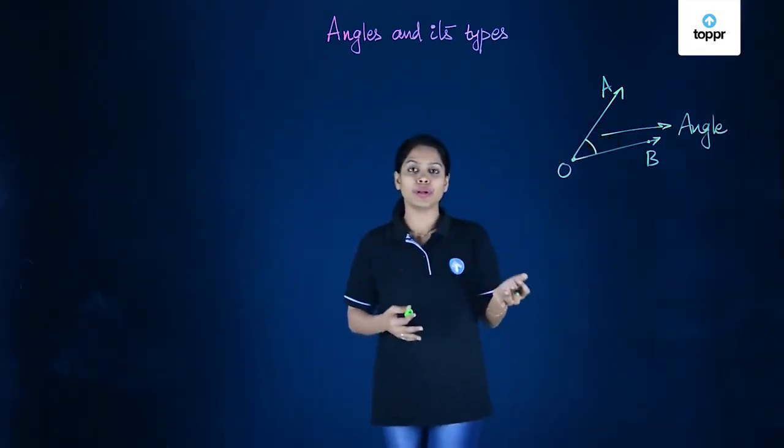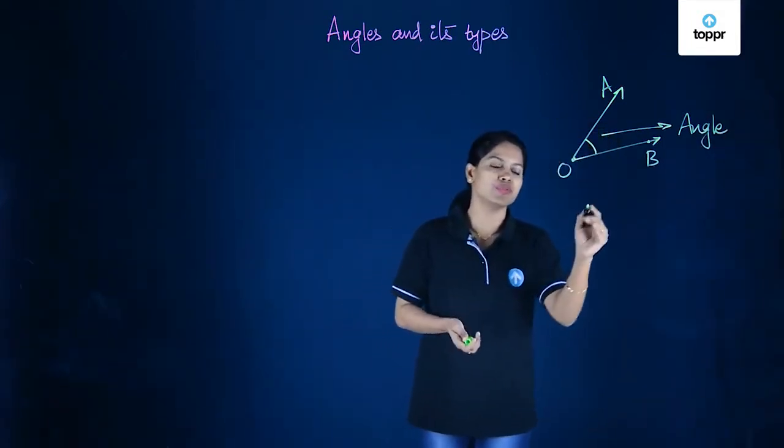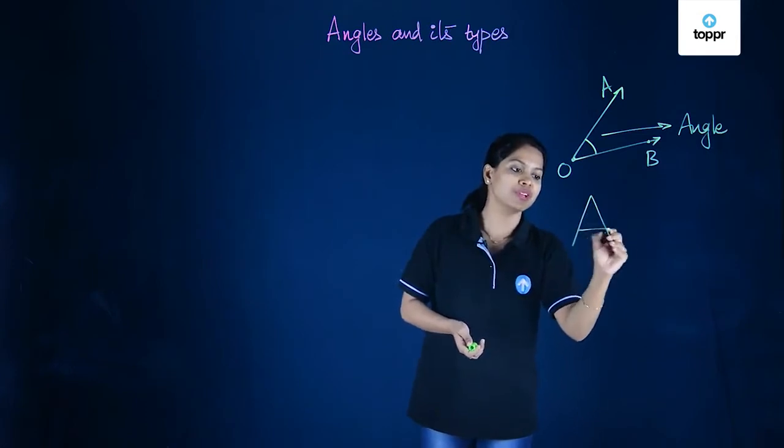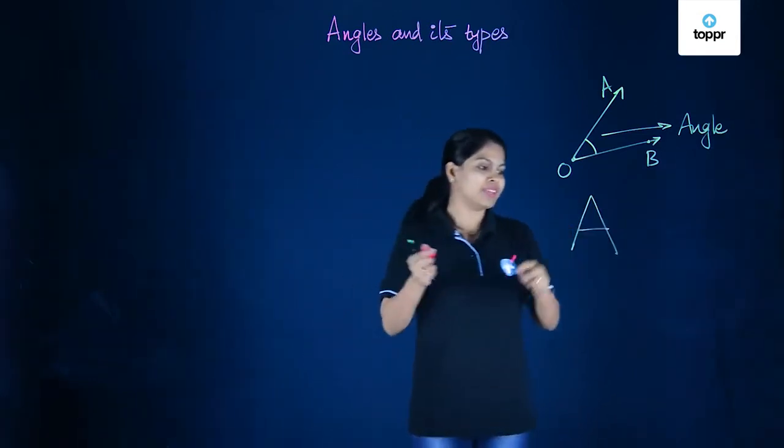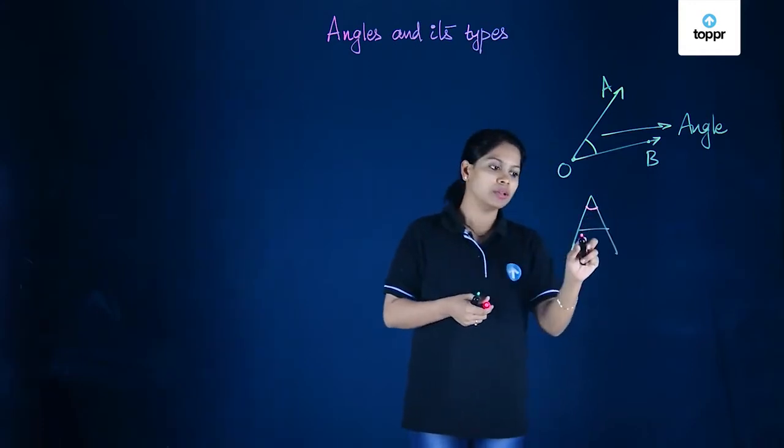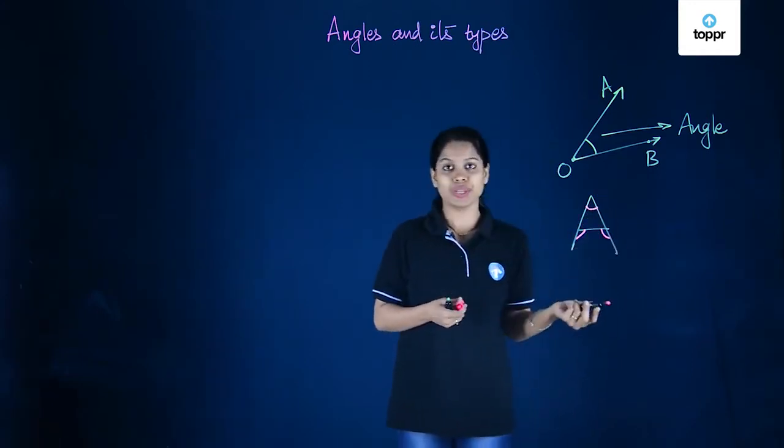Now we see angles all around us. We can see angles when we look at the English alphabets. For example, in the English alphabet A, we can find various angles. This here is an angle, this is an angle, and this also is an angle.